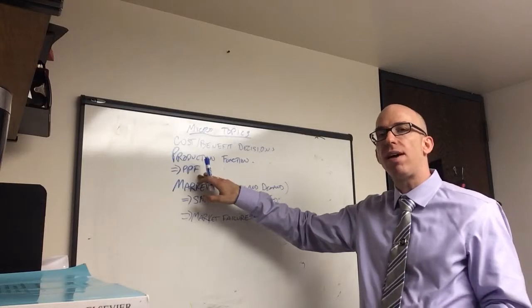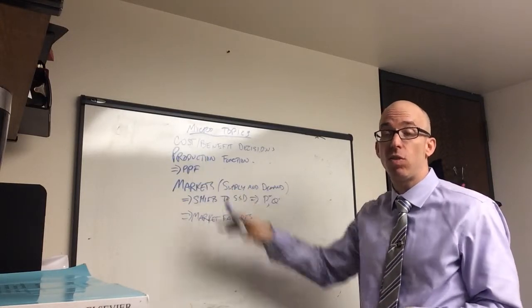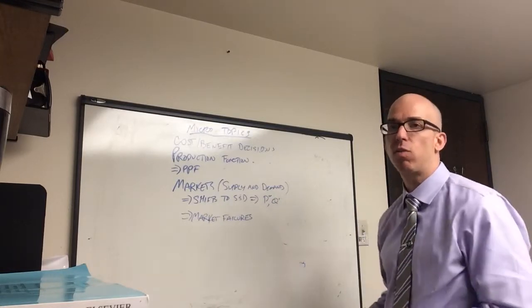It also shows a cost-benefit ratio as a line, a tangent line on that curve. So it shows how costs and benefits change as you change your mix of products due to that allocation of resources.